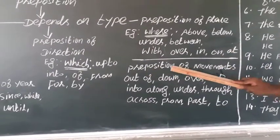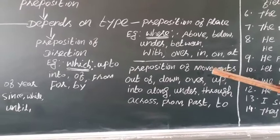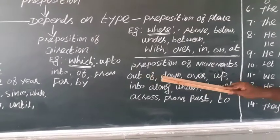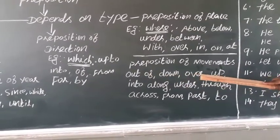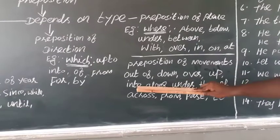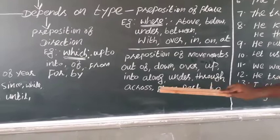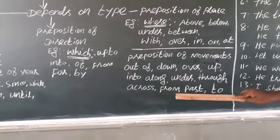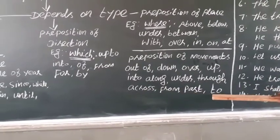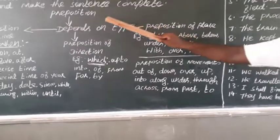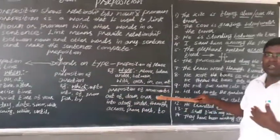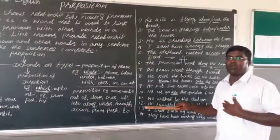And next, preposition of movements. Out of, down, over, up, into, along, under, through, across, from, past, to. Okay, this, you must remember this. Let us now take one by one. You read the first sentence.